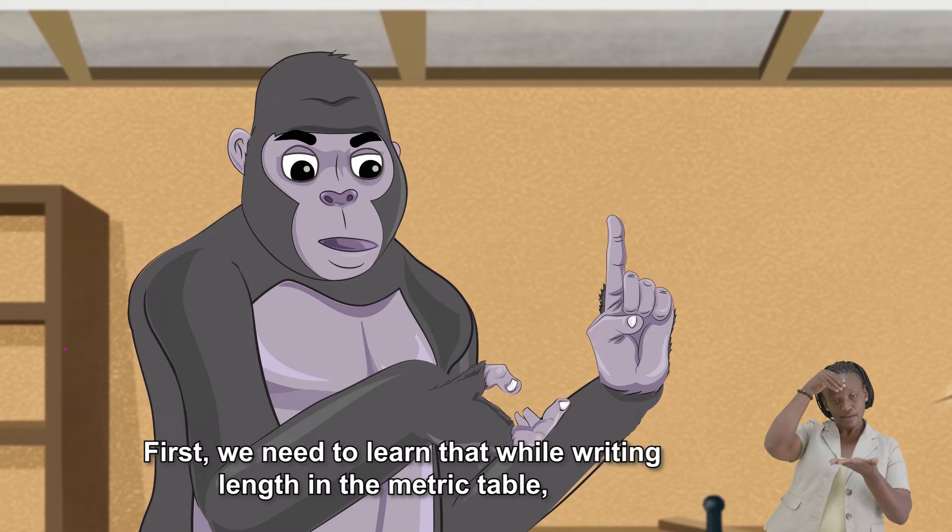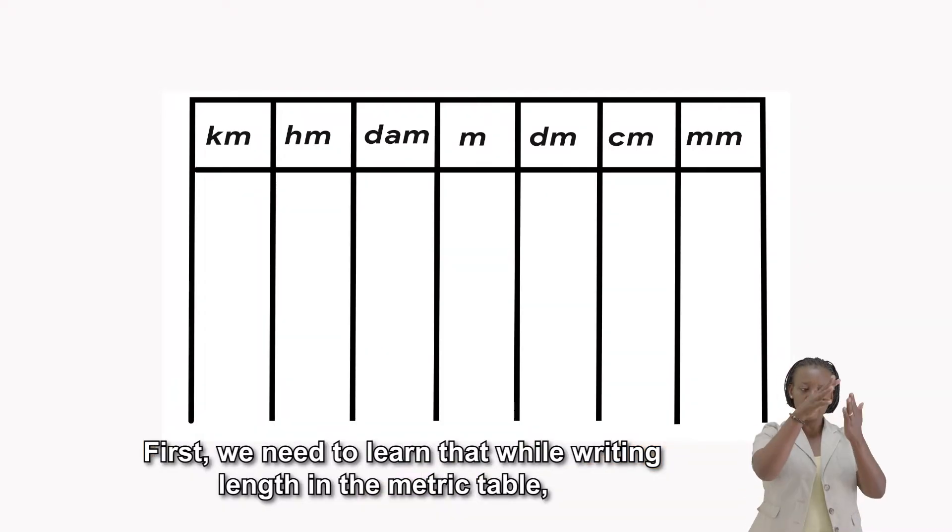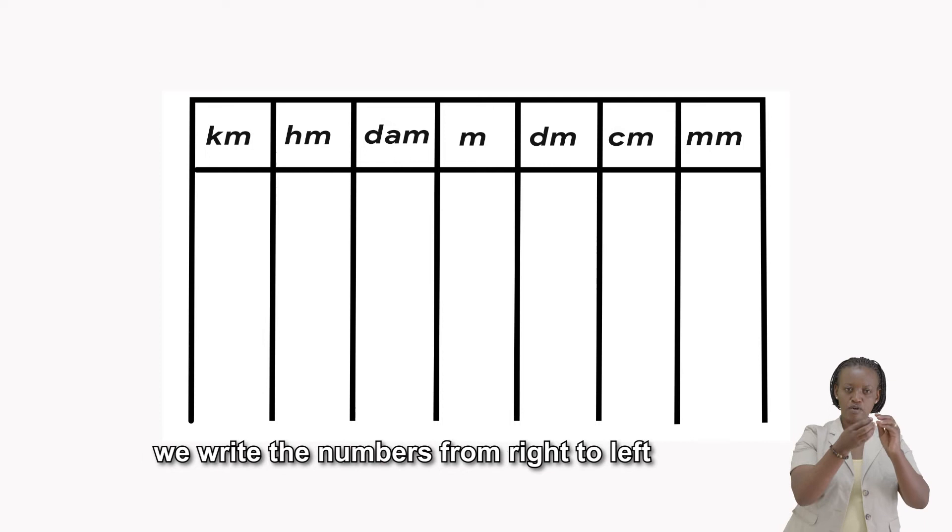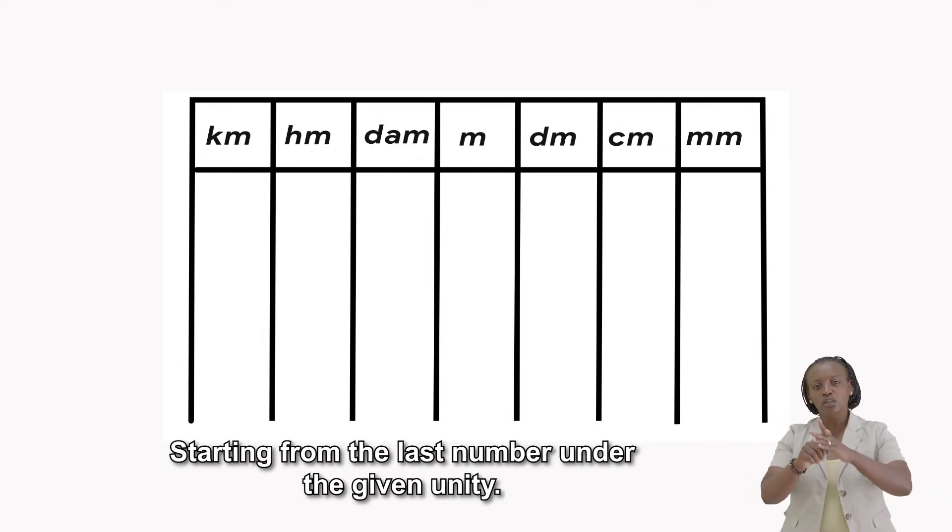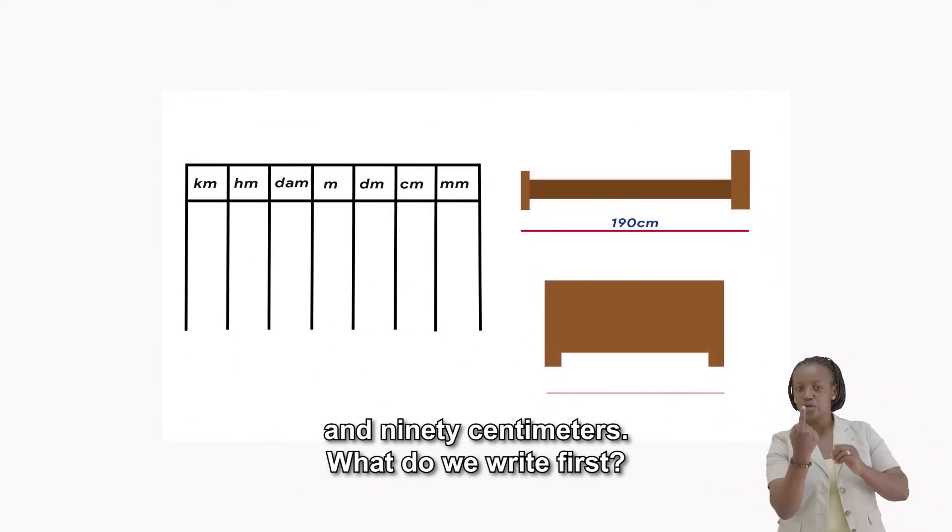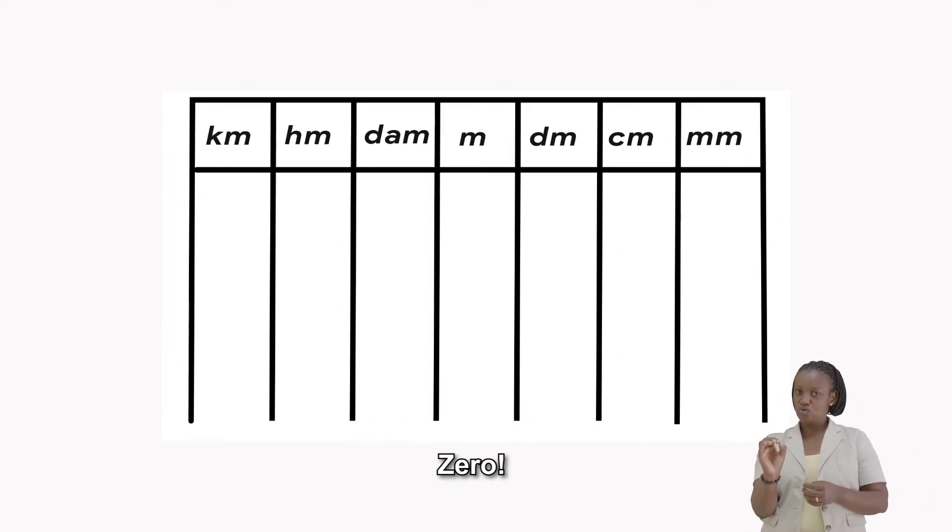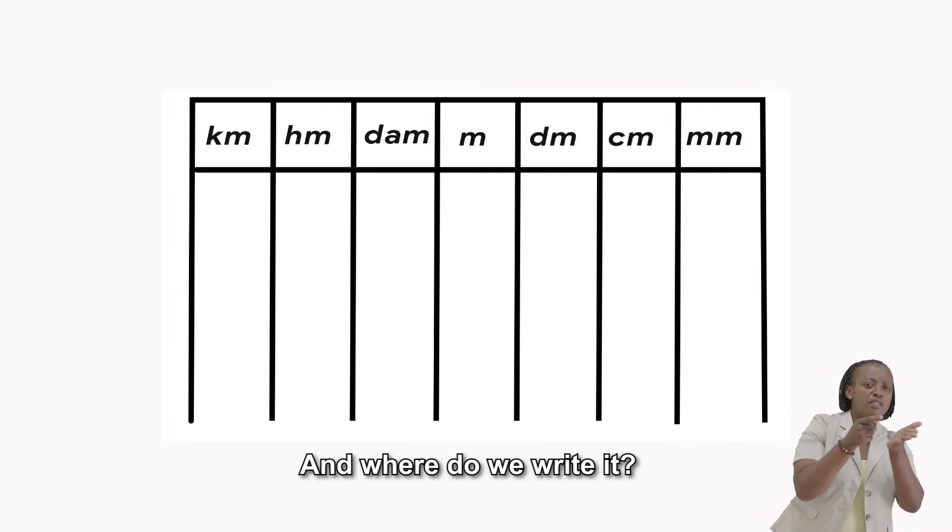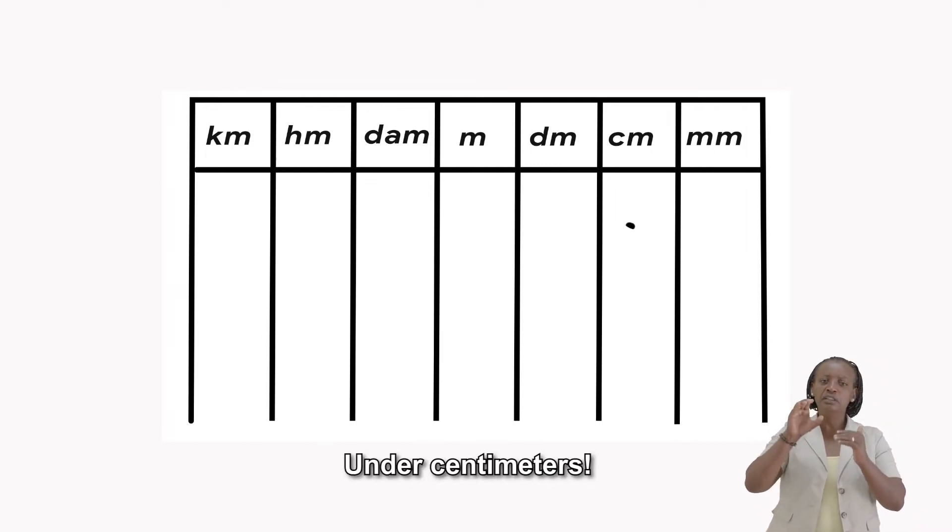First, we need to learn that while writing the length in the metric table, we write the numbers from right to left, starting from the last number under the given unit. The length of our bed is 190 centimeters. What do we write first? Zero. And where do we write it? Under centimeters.